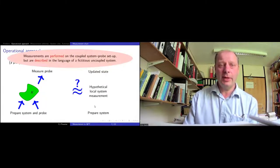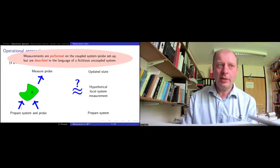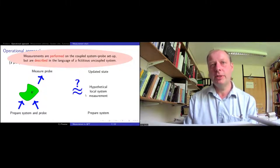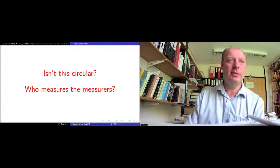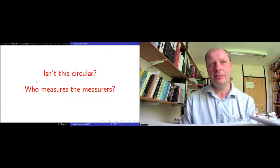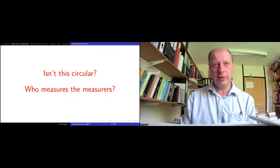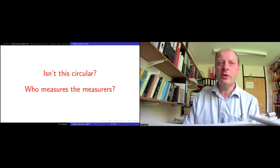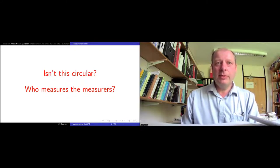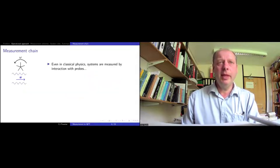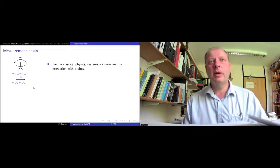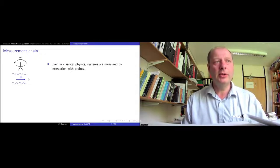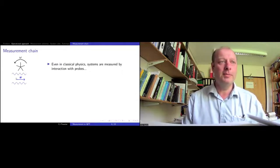We're going to boil down a complicated experiment into the idea that these two fields only couple together in this particular compact region K. We prepare the system and probe at early times, they get coupled together, and at late times we measure the probe. What we'd like to do is interpret this whole setup as: preparing the system, making some measurement of the system that's hopefully local, and emerging with some idea of an updated state. The question is how do we turn this real-life situation into this slightly more clean and fictitious one.